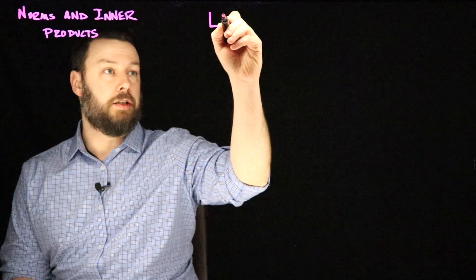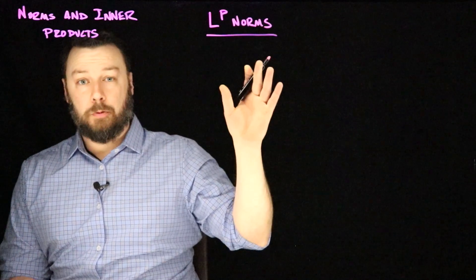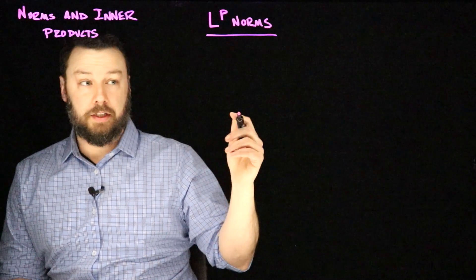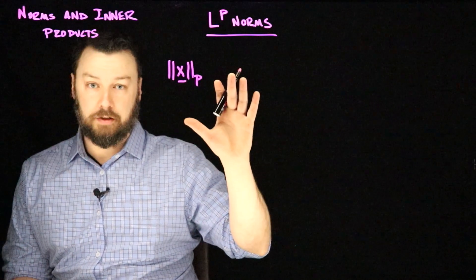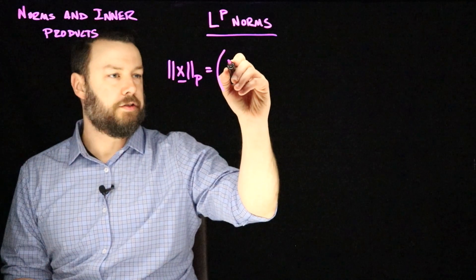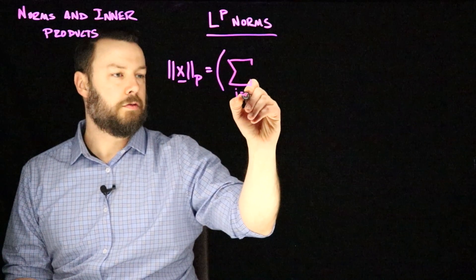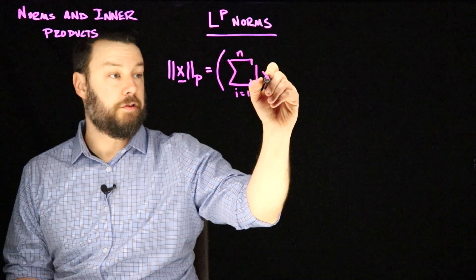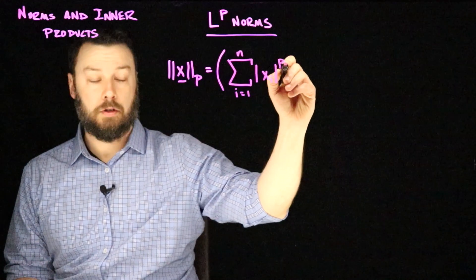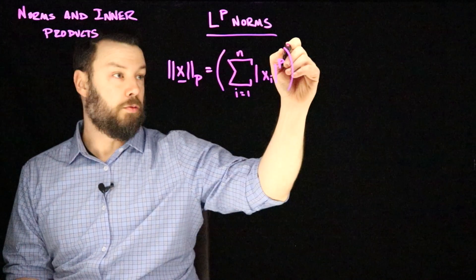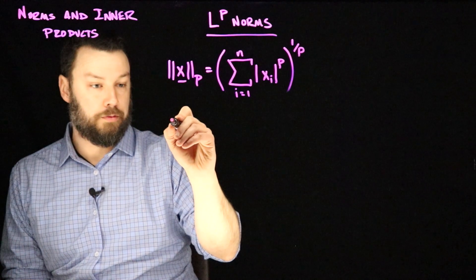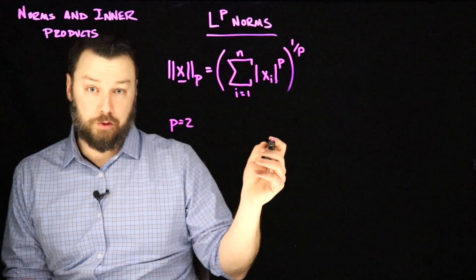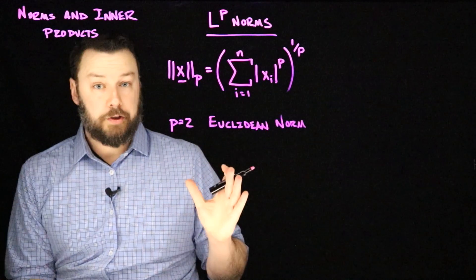One family of very important general-purpose norms is the L^p family. The idea of an L^p norm is that we generalize the Euclidean norm with an exponent p. We write the L^p norm as the sum over dimensions of the absolute value of each component raised to p, then that sum raised to the power 1/p. You can see right away that when p equals 2, we get the familiar Euclidean norm.